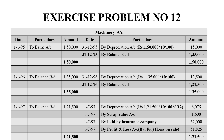On the credit side: scrap value is Rs. 1,600, and the insurance company paid Rs. 62,000 due to the fire accident. The balancing figure is Rs. 51,825 on the credit side — that is the loss. By Profit and Loss Account: loss on asset is Rs. 51,825. The grand total on both sides is Rs. 1,21,500. Since we did not sell the machinery, the balancing figure is a loss on the credit side.